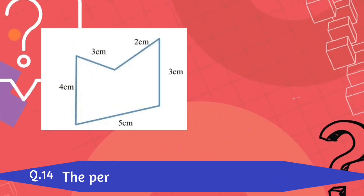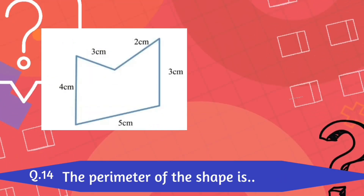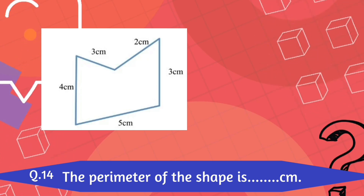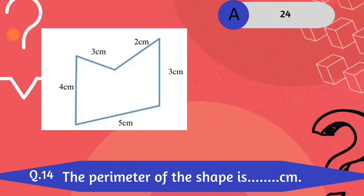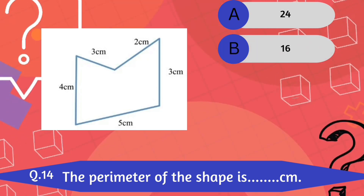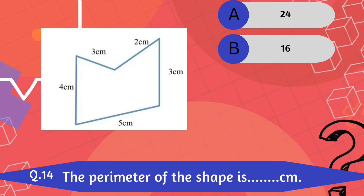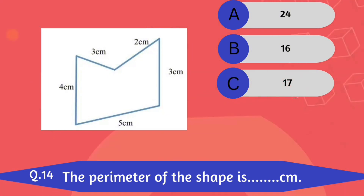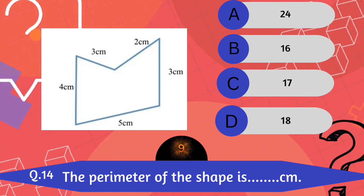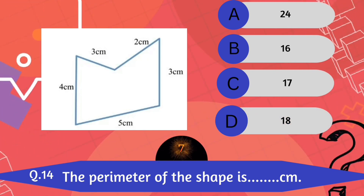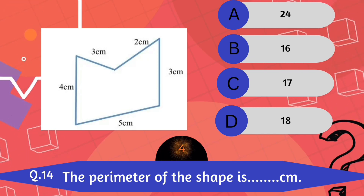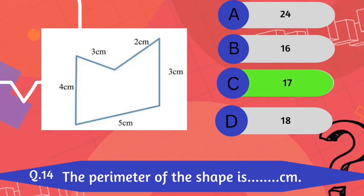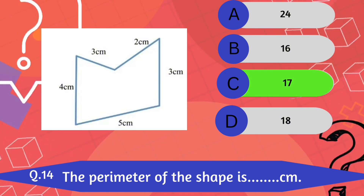Question number 14. The perimeter of the shape is dash cm. A. 24 centimeters. B. 16 centimeters. C. 17 centimeters. D. 18 centimeters. 18 centimeters is the correct answer.